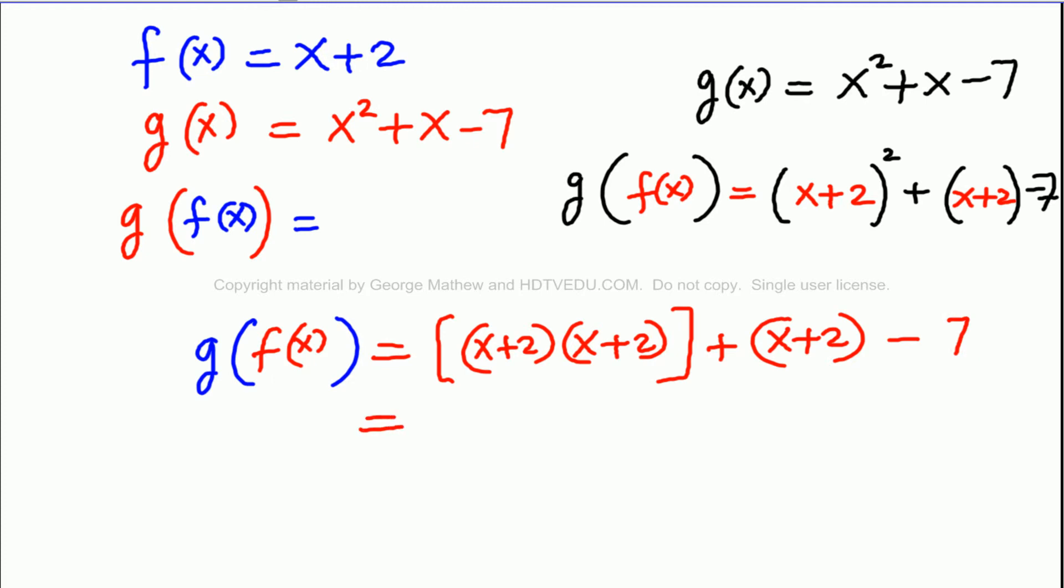First times x is x to the power of 2. What is outer times outer? x times 2 or 2x. What is inner times inner? 2x. And what is last times last? 2 times 2 that is 4. And then we have x plus 2 minus 7.